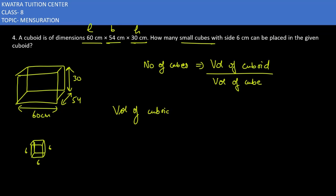Volume of cuboid. It is L into B into H. 60 into 54 into 30. When you multiply these three, you will multiply these three. So what do you do?